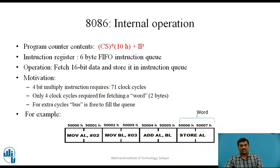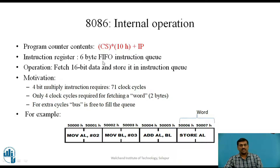Now let us move to the 8086. In the case of the 8086 microprocessor, it also follows the general operations of the CPU but there are some differences. The program counter address of the next instruction is given as the summation of the instruction pointer contents and CS contents multiplied by 10H. The instruction register is nothing but the 6-byte first-in first-out instruction queue, which is continuously filled. This look-ahead feature is very important and it increases the overall throughput of the 8086 microprocessor.